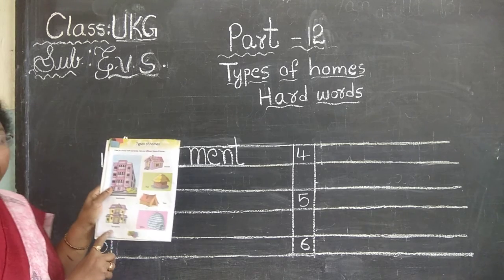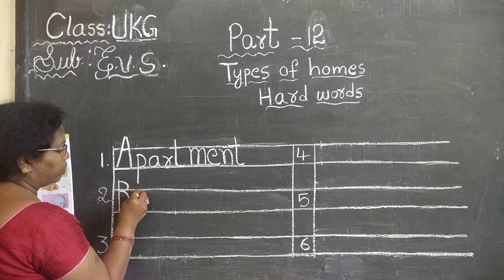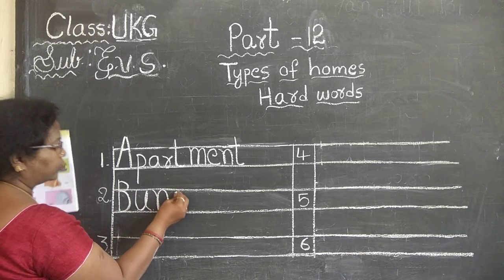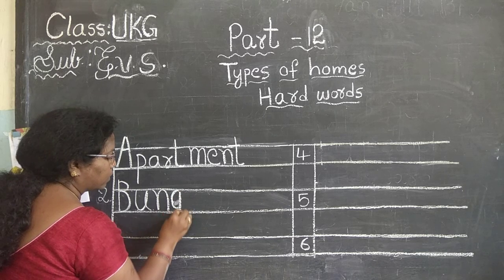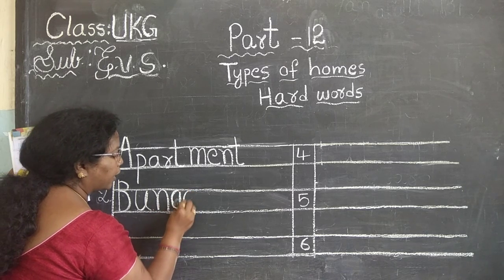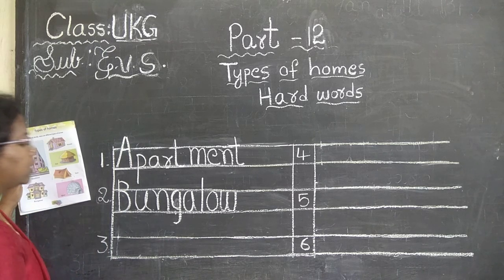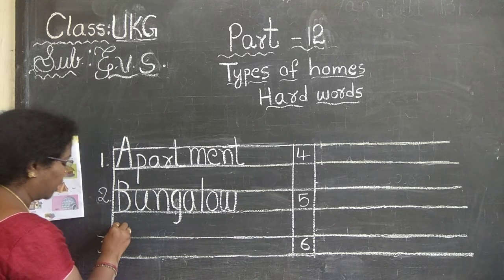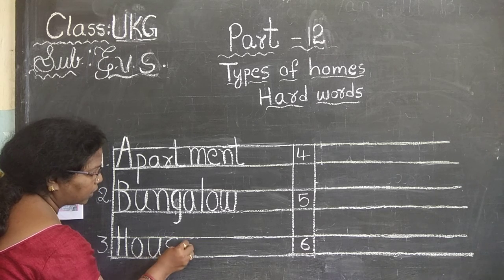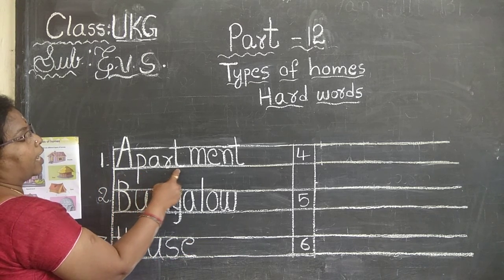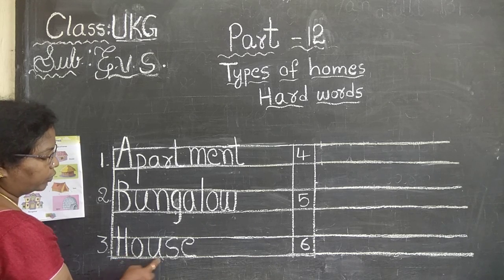Now what is the next one? Read next one. B-U-N-G-A, L-O-W. Write B capital. B-U-N-G. G you have to touch two lines. Touch two lines. G-A-L-O-W. B-U-N-G-A-L-O-W. Bungalow. House. H-O-U-S-E. House. A-P-A-R-T, apart. M-E-N-T, meant. Apartment. B-U-N-G-A-L-O-W. Bungalow. H-O-U-S-E. House.